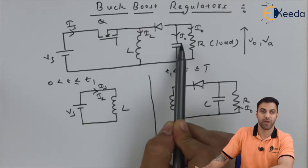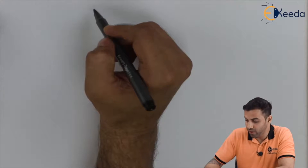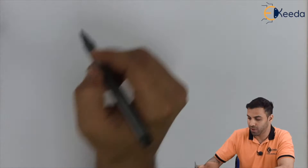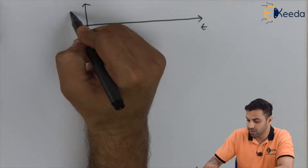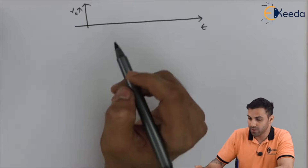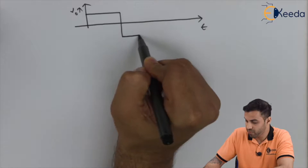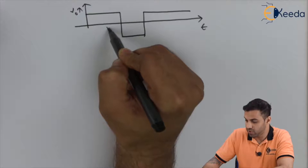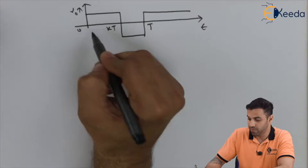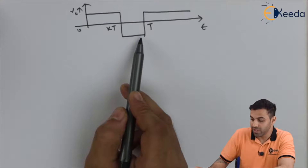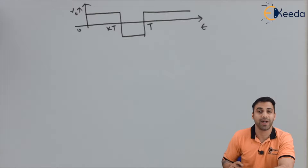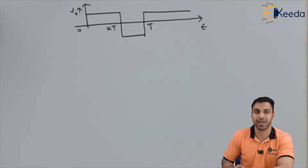Now if I draw the waveform of the instantaneous output voltage with respect to time: from 0 to kT is the ON time, and from kT to T is the OFF time. The voltage reverses its direction because the current also reverses due to the connection of the flyback diode and the inductor.